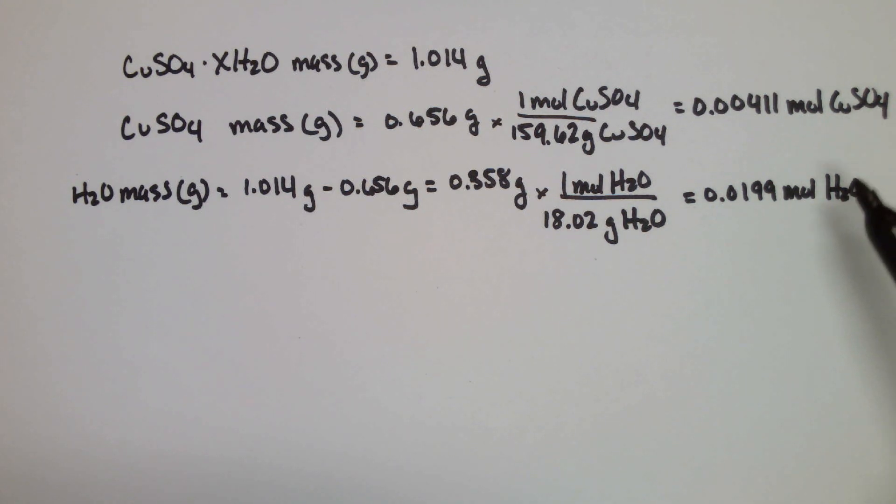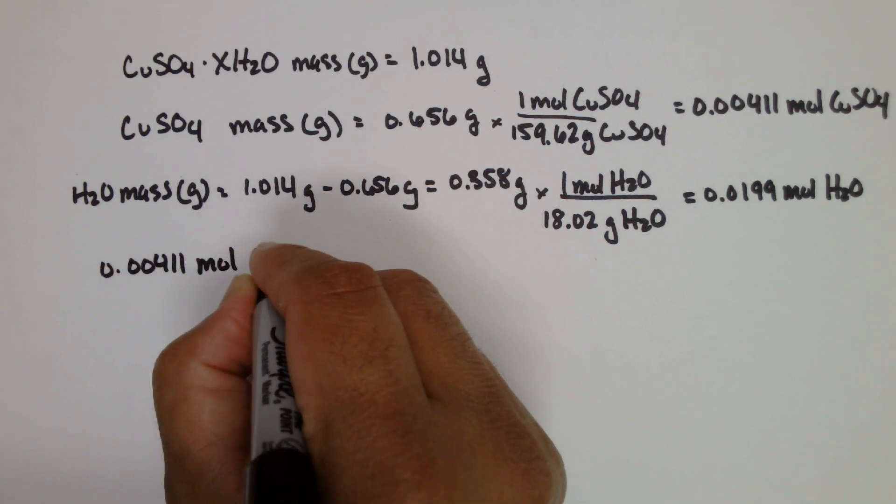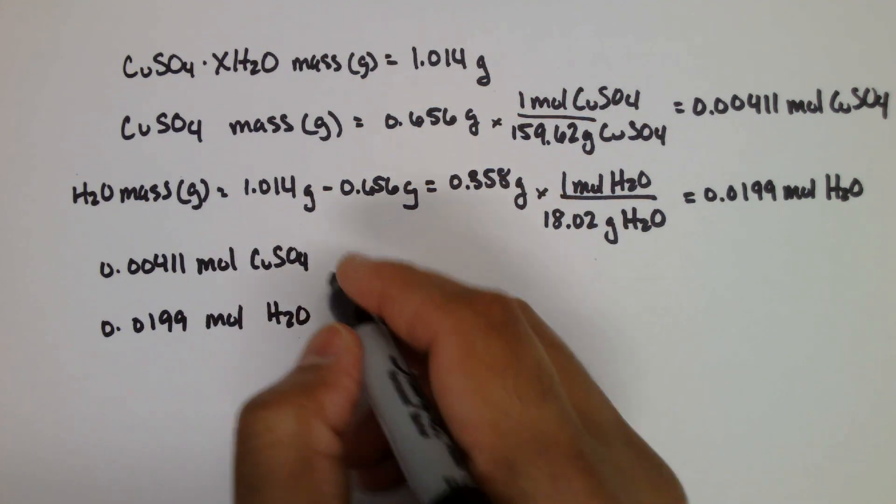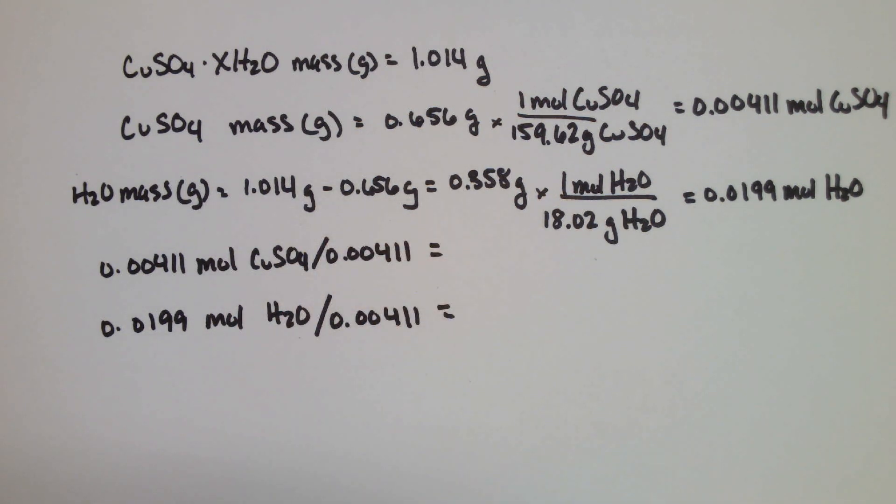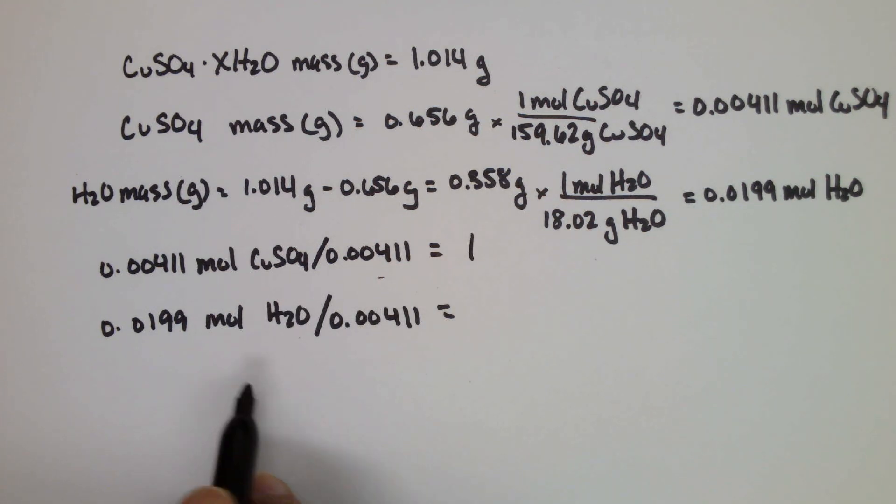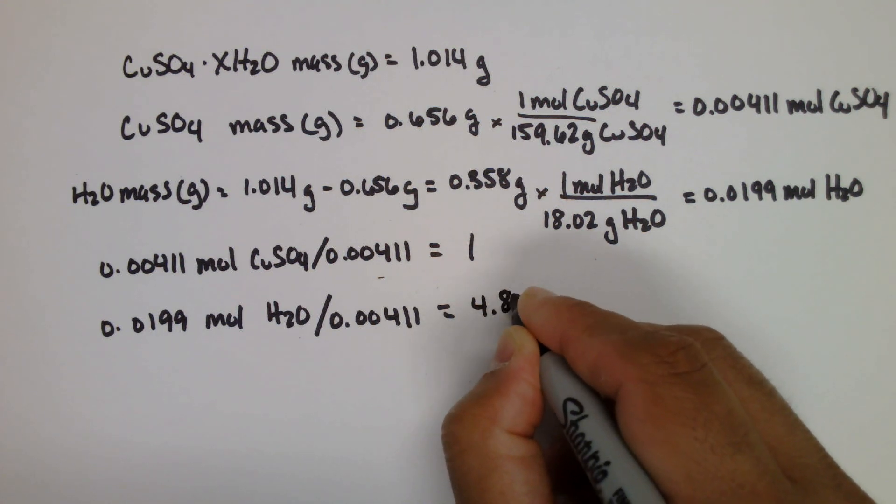Let's go ahead and divide by the smallest moles to get our ratio. So according to my calculations, copper sulfate, that ratio is simply one, and then for water we get 4.84.